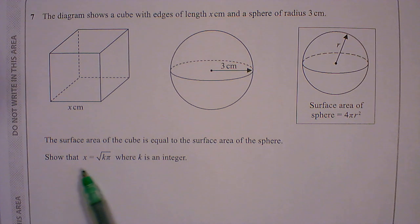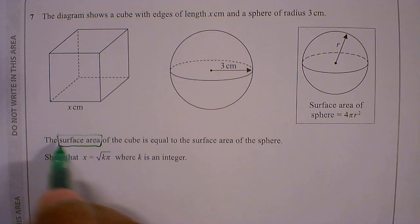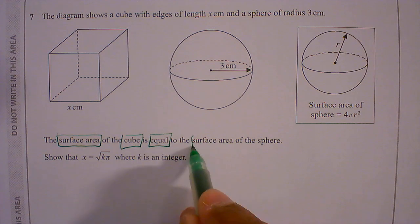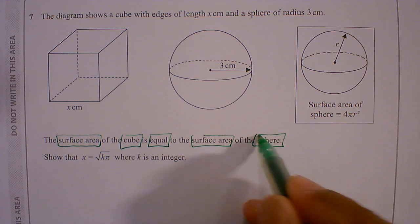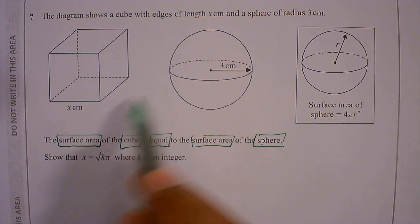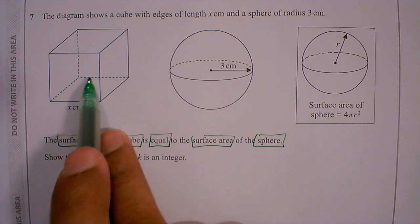Show that x equals square root of kπ where k is an integer. So let's look at this. The surface area of the cube is equal to the surface area of the sphere. So we've got this equals to that, and we've got this formula. So what's the surface area of a cube?